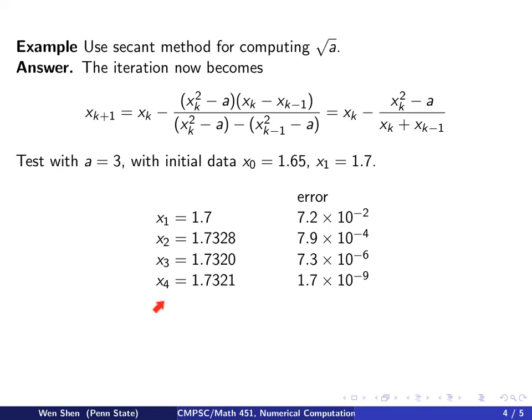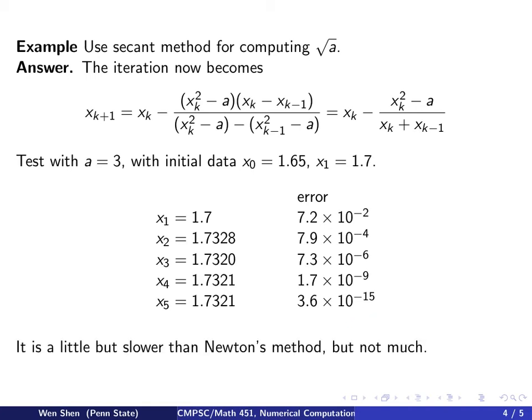And one more iteration, I get 1.7321, my error is 10 to the negative 9. And one more iteration, and then we see my error now reduced down to 10 to the negative 15.